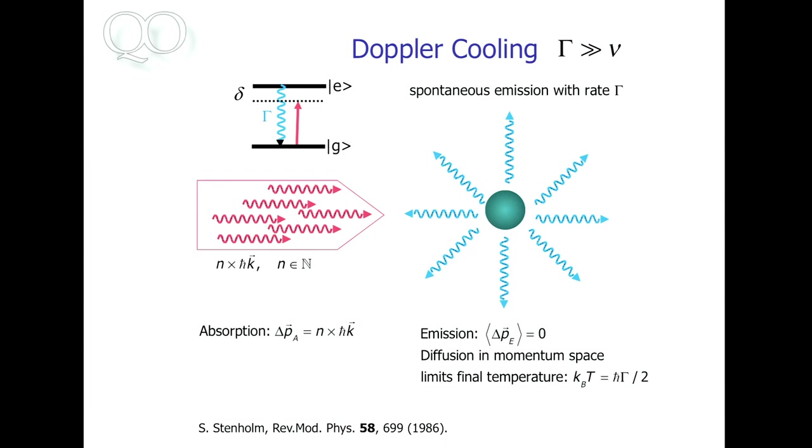So it changes its velocity by this momentum divided by the mass of the atom. And then at some later time, it emits radiation in an arbitrary direction. So you always get kicks in one direction, but you emit in arbitrary 3D directions. So your recoil is in an arbitrary direction, which means, on average, you cool down, you slow down this one-dimensional motion here. And if you do this often enough, so one photon momentum is by far not enough, but then you do this often enough.